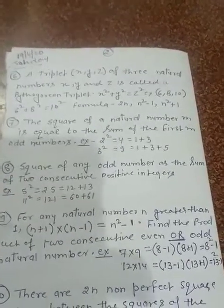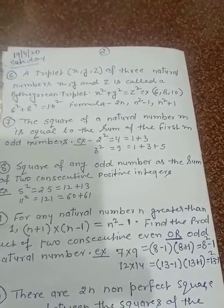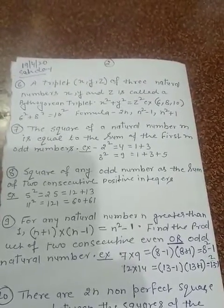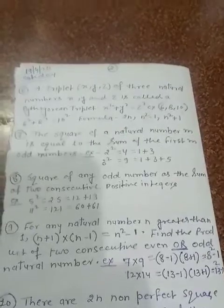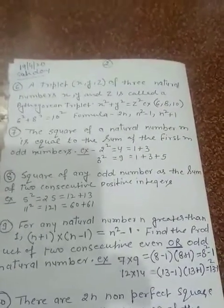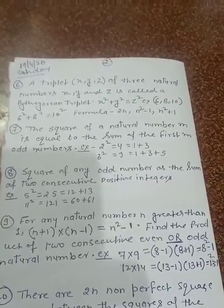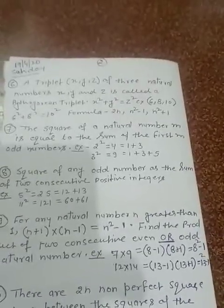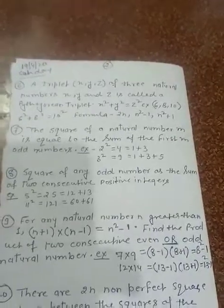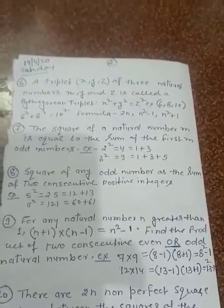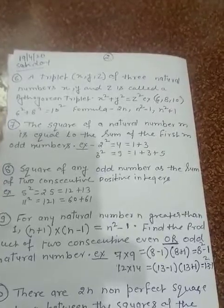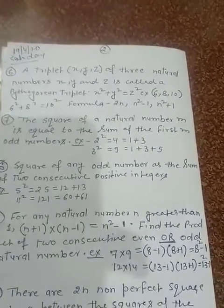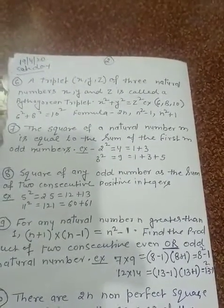Now, property number 8. Square of any odd number as the sum of 2 consecutive positive integers. For example, we take the odd number 5. Square of 5 is 25, and here we get 2 odd numbers: 12 + 13. Why 12 + 13? Because these are 2 consecutive odd numbers.